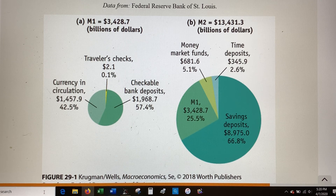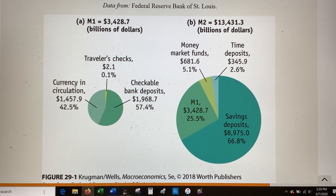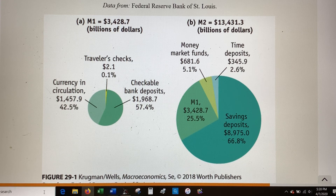Today in our lives we have paper money and we have electronic money. The paper money includes coins — our Federal Reserve notes, the ones, fives, tens, twenties, and so on — and all the coins. The electronic money would be your debit card or when you write a check.